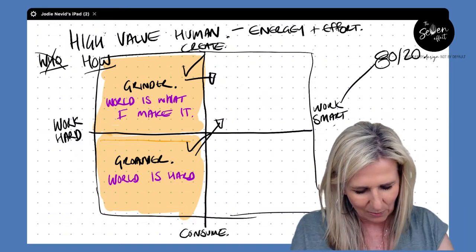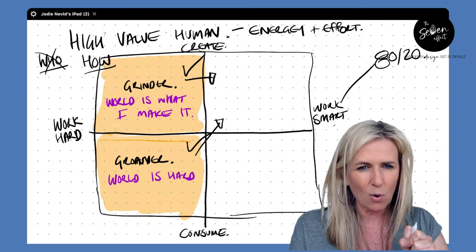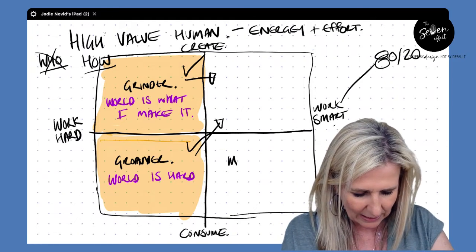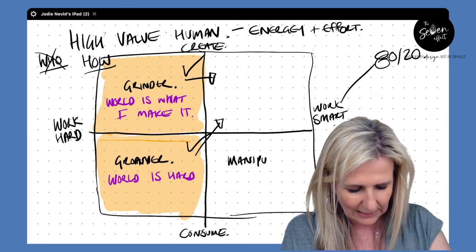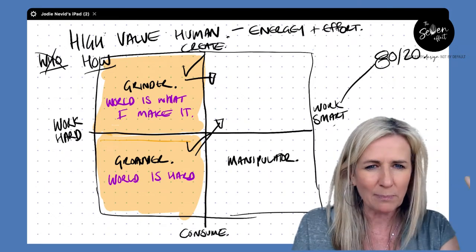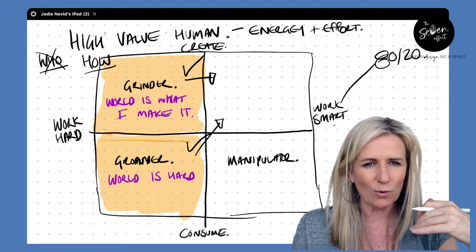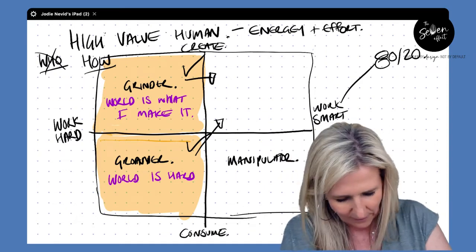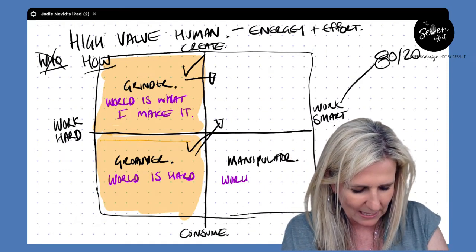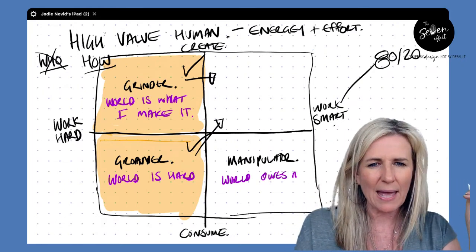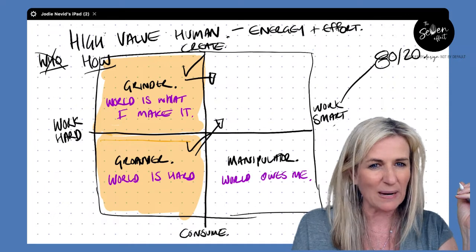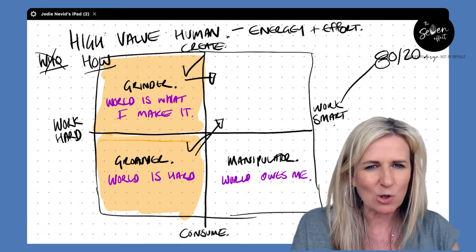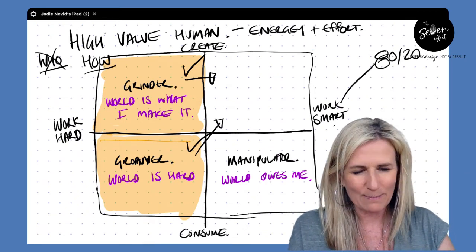This space down here, however, where we are consuming more than we are contributing or creating, but we have cracked the code on working smart is where the manipulator. And sadly, this does happen. People will work the system, manipulate situations for their own good. So the manipulator zone is a place where people are very focused on one core belief, the world owes me. And here, if you can imagine, you have people that have maybe felt like they've been hard done by, or they've been taken advantage of, and now they seek revenge, and they want to take advantage or manipulate situations to get things back for themselves.